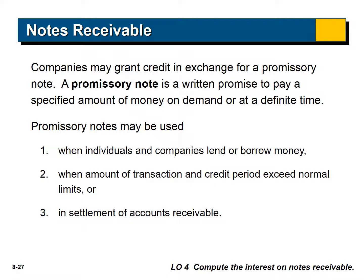Now let's go to our second type of receivable: notes receivable. Companies may grant credit in exchange for a promissory note, which is a written promise to pay a specified amount of money on demand or at a definite time. Promissory notes may be used when individuals or companies lend money — for example, a bank — or when a credit period exceeds normal limits, such as granting 90-day credit instead of the usual 30 days. They can also be used when settling accounts receivable where a customer can't pay, so you extend the terms and start charging interest.